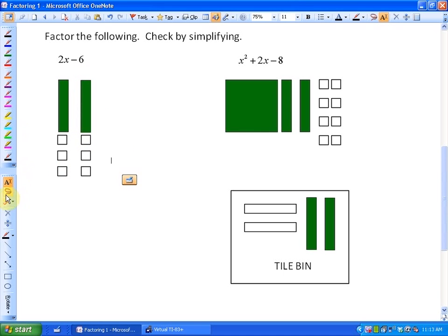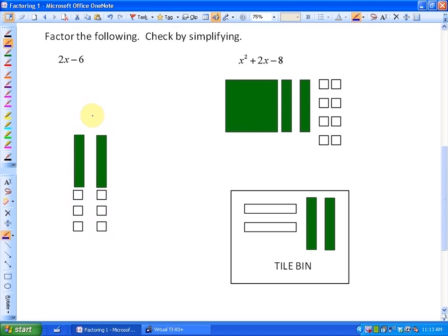And this area, just to be exact with you, is 2 times x minus 3. I'll write that here. This is 2, and this here is x minus 3. So our factors are 2 and x minus 3.